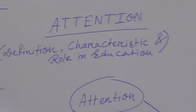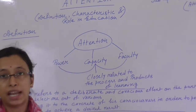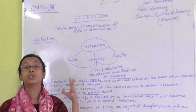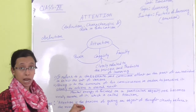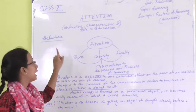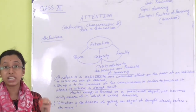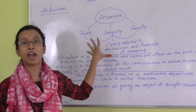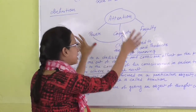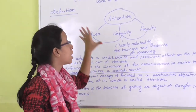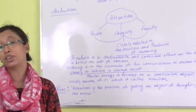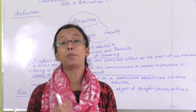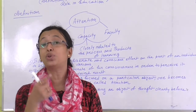In your syllabus you have the definition of attention, characteristics of attention, and the role of attention. Starting with the definition: when you look at or hear the word 'attention,' you need to focus on it. Attention is actually a combination of three factors: power, capacity, and faculty. These three factors combined make up attention, and it is closely related to our learning system — if you don't give attention to your learning, you cannot learn anything properly.